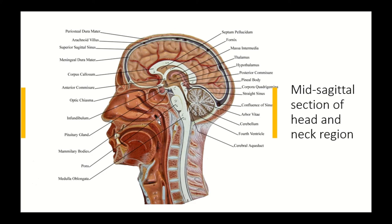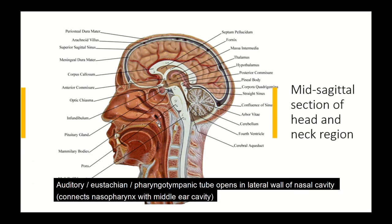The lateral wall of the nasopharynx is characterized by the opening of the eustachian tube — the pharyngeal tympanic tube — which connects the nasopharynx to the middle ear cavity. When people have inflammation of the nasopharynx, such as nasopharyngitis, the mucosa lining the tube can become blocked due to swelling, leading to a disconnect between the middle ear cavity and the nasopharynx and a negative pressure building up inside the middle ear.